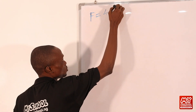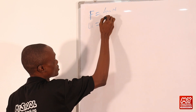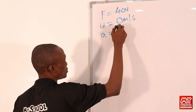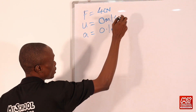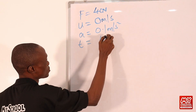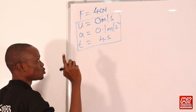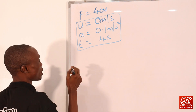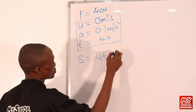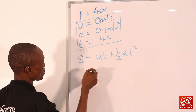From the question: F = 40 N, initial velocity u = 0 m/s (body at rest), acceleration a = 0.1 m/s², and time t = 4 s. We calculate distance using the second equation of motion: x = ut + ½at².